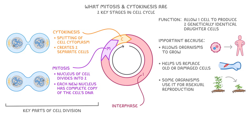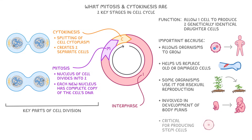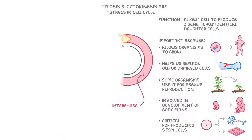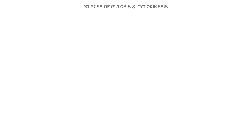In addition, mitosis is involved in the development of body plans — how all the different body parts grow in the right places whilst we're developing. Finally, mitosis is critical for producing stem cells, which are able to differentiate into various cell types. Next, let's look at the key stages of mitosis and cytokinesis.